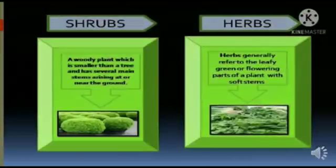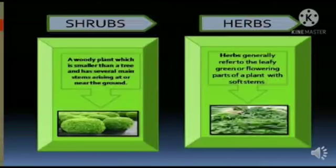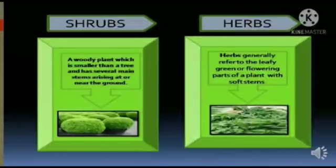As you can see in the picture, we will talk about shrubs and herbs. So what are shrubs? A woody plant which is smaller than a tree and has several main stems arising at or near the ground. So what are herbs? Herbs generally refer to the leafy green or flowering parts of a plant with soft stems.